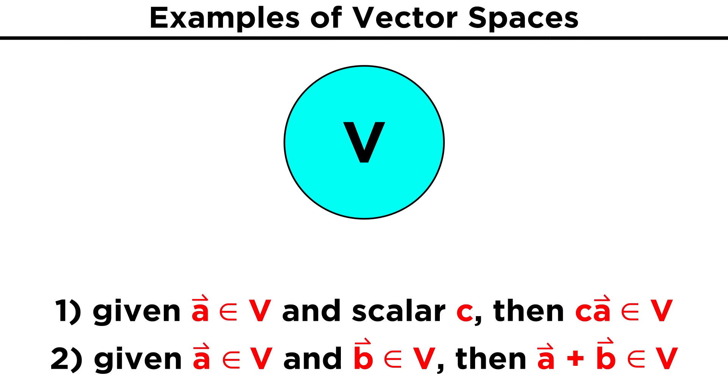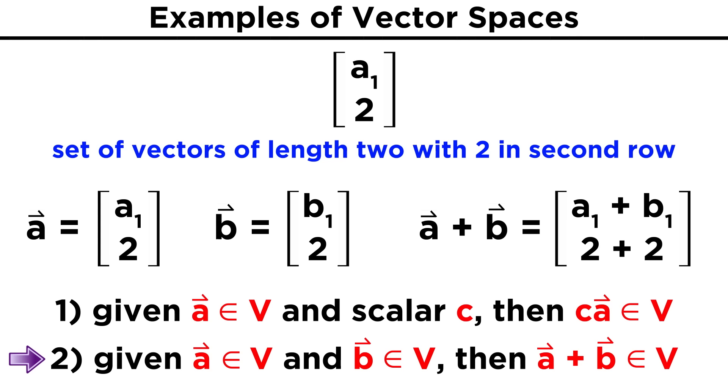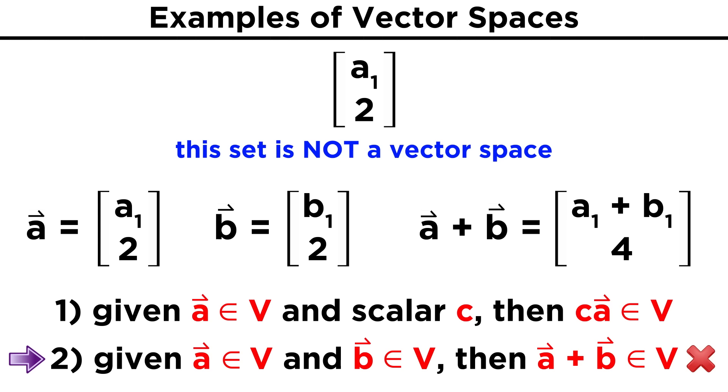We've listed a lot of examples of vector spaces now, so what does it look like when the closure properties are not satisfied? Take for example a simple set made of vectors of length two, however all the elements of this set have a value of two in the second row. Let's take two elements of this set, a and b, and try adding them together. We don't even need to assign values for the entries in the first row to see what will happen. The first row will be the sum of a₁ and b₁, while the second row will be two plus two, which is four. Our starting set only contained elements with the value two in the second row, but when we added two vectors of this set, we got a four in the second row, which means the sum is not a member of the set. Thus the set is not closed and is not a vector space, despite the fact that it is made of vectors.